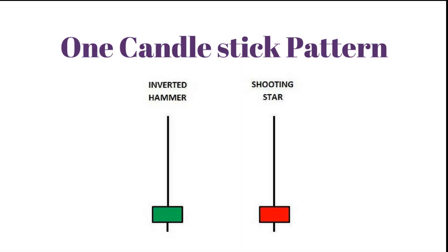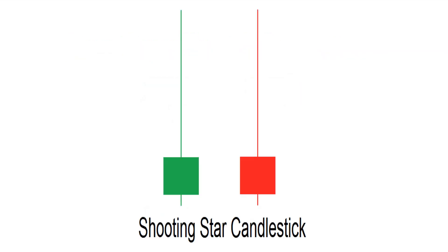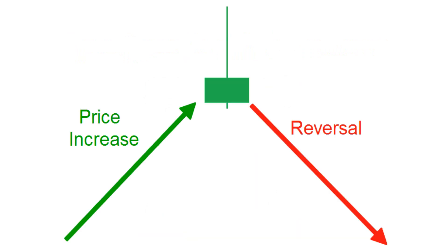Shooting star and inverted hammer. Other candles similar to the hanging man and hammer are the shooting star and inverted hammer. The shooting star candlestick formation is viewed as a bearish reversal candlestick pattern that typically occurs at the top of uptrends. The shooting star formation is created when the open, low, and close are roughly the same price. Also, there is a long upper shadow, generally defined as at least twice the length of the real body.